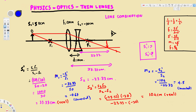To find the total magnification relative to the original object, we use m_total equals m1 times m2. That's negative 0.67 times 4.5, which gives us negative 3. So the final image due to the diverging lens is three times bigger and inverted. That's how we solve this type of problem — I hope this helps, thanks for watching.